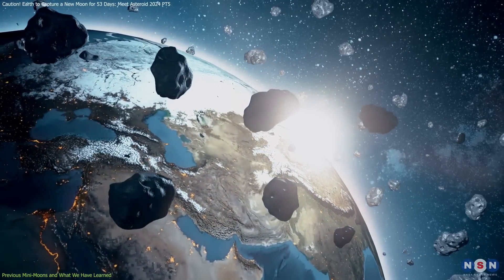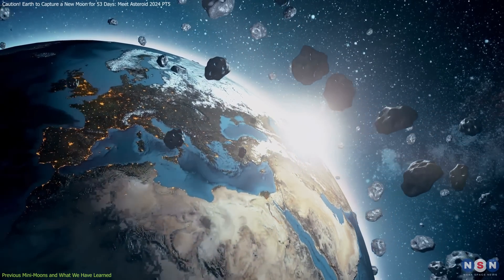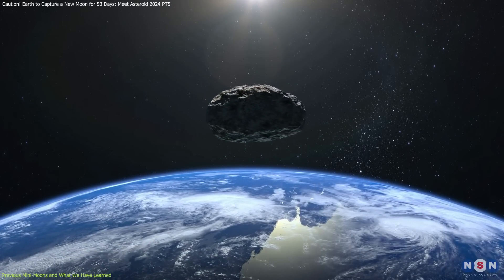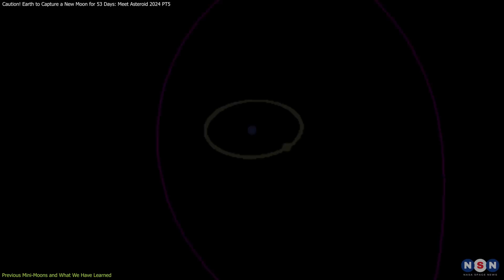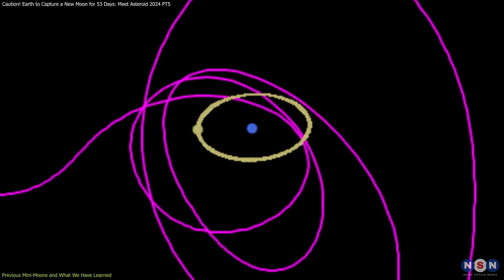These past instances of mini-moons have contributed significantly to our understanding of near-Earth objects. They have shown that Earth's gravity can temporarily capture small asteroids, causing them to orbit for a brief period before continuing their journey around the Sun.